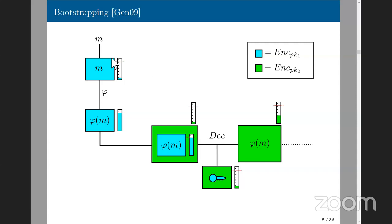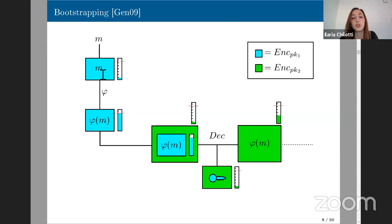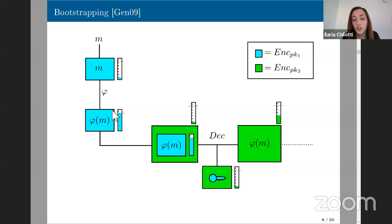A clarification on the bootstrapping diagram: phi doesn't need to be encrypted. Phi represents a set of additions and multiplications — operations in general. You don't need to encrypt the operations, only the data. There are solutions for circuit hiding, so maybe you don't hide the operation, but the result doesn't give information about it. You might also choose to hide the operation by evaluating a generic function as a lookup table.